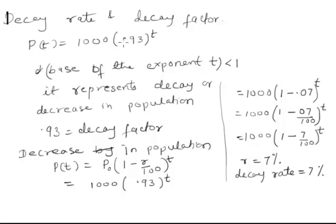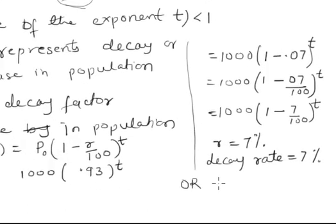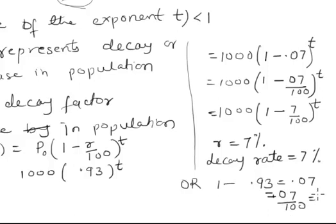The decay factor is the whole value that serves as the base for the exponent t. The decay rate is calculated by subtracting the decay factor from 1: 1 minus 0.93 equals 0.07, and 0.07 equals 7 over 100, which represents 7%. That is how we calculate the decay rate.